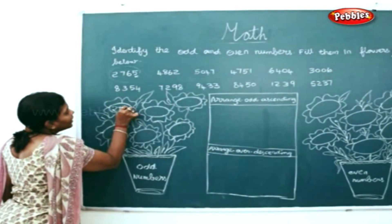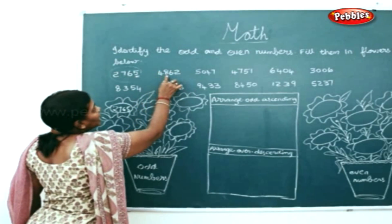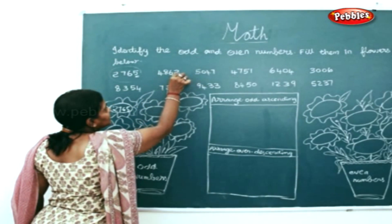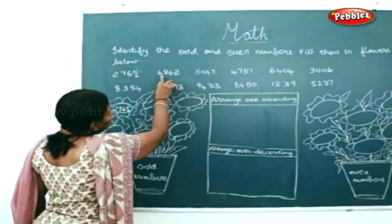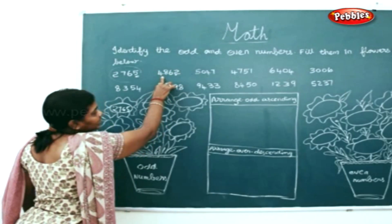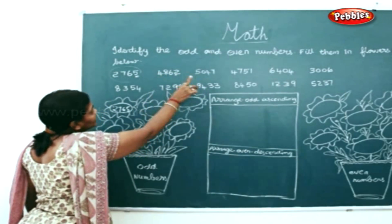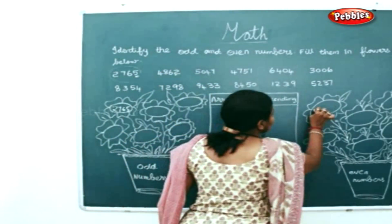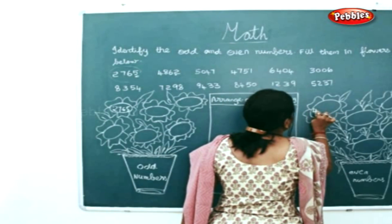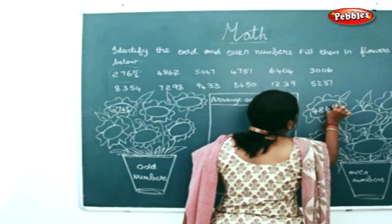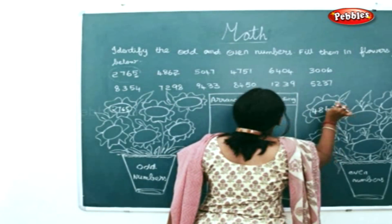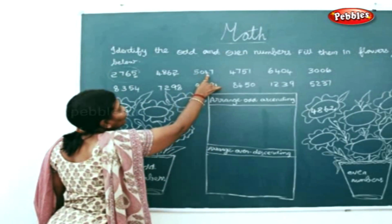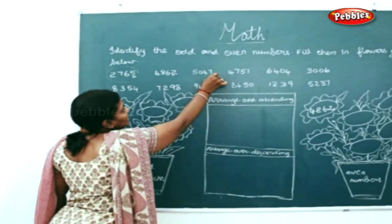Next, 4862 — take the ones place: 2 is an even number, so I'll write this number in the even numbers place: 4862.